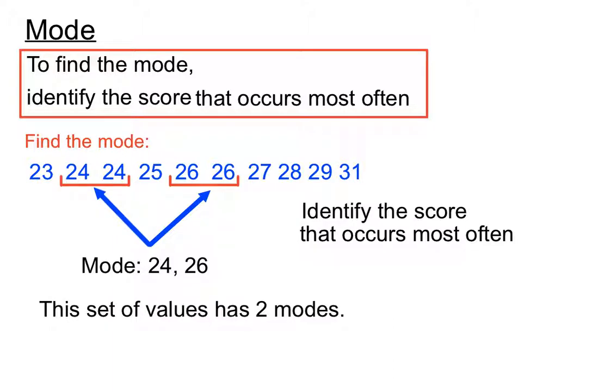We can have more than two modes sometimes as well. But this set of values has two modes and we have a special name for it. We can say that this set of values is bimodal. It has two scores that occur the most.